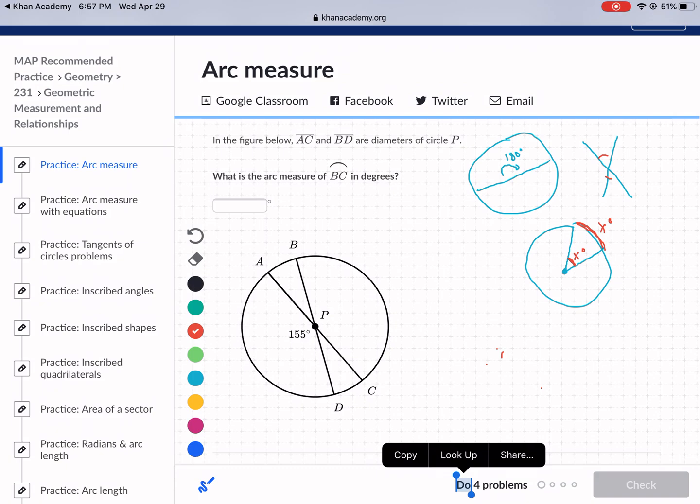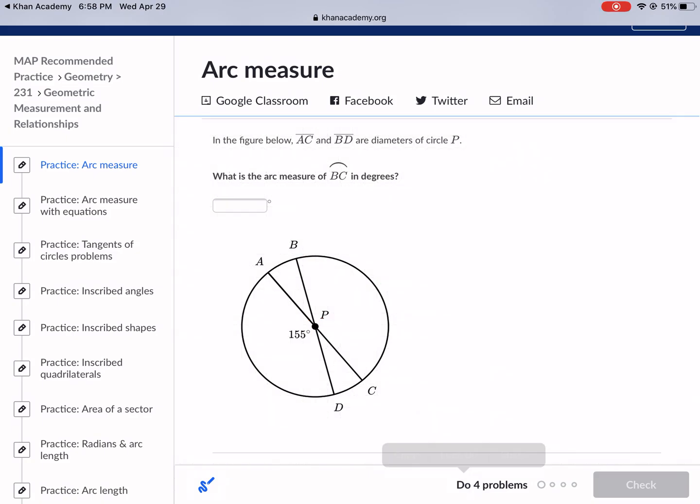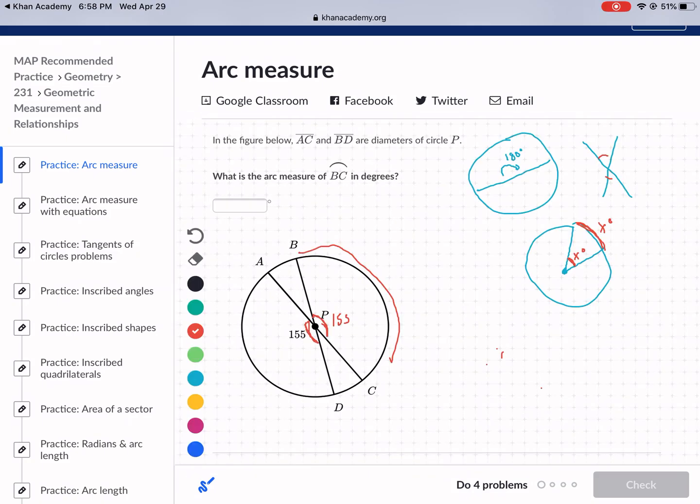Okay, so let's move on with this problem. So it looks like this is given as 155, and we're asked to find BC. So what is the arc measure of BC in degrees? So if I'm looking at this correctly, it looks like BC is this right here. And because this is 155 here, we know this is a vertical angle. So this also is 155. Okay, so BC should also be 155. So we're going to put that in for our answer, but I just want to double check to make sure you guys understood that.